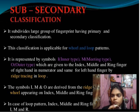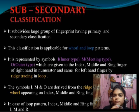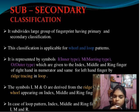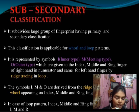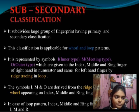Then we discuss about the New Method of Ridge Tracing and Ridge Counting. In this, we discuss about Ridge Tracing and Ridge Counting in between the delta and core. It is represented in the form of I, M, and O — meaning inner, middle, and outer.